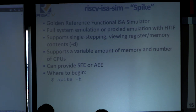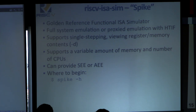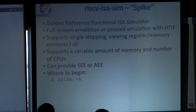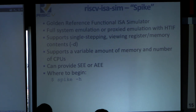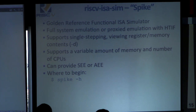The next piece of software in RISC-V tools is RISC-V ISA sim, also called Spike. It's a golden reference functional simulator — it does either full system emulation or proxied emulation using the front-end server and proxy kernel. It supports single stepping, viewing register and memory contents, all the debugging stuff Albert will talk about in the next talk. You can configure it with a variable amount of memory and CPUs. You can start it at the command line by typing spike -h, and we'll actually try it out in a couple of slides.